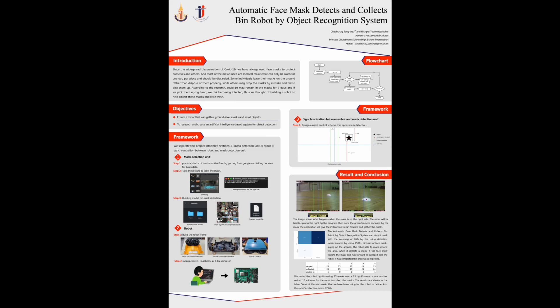Our framework separates this project into 3 sections. The first is the mask detection unit. Step one, we prepare photos of masks on the ground by getting images from Google and taking our own, for base data. Step two, we take pictures to label the masks. Labeling is the way that we select the object in the picture and extract the coordinates of the object.